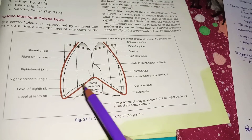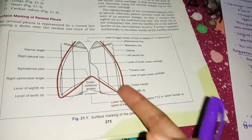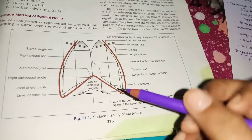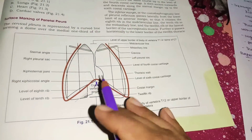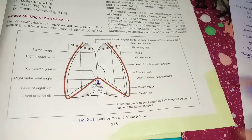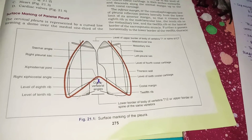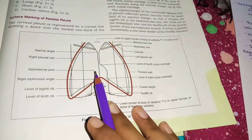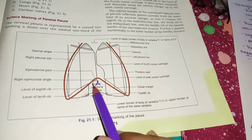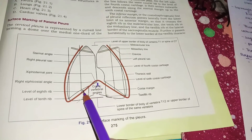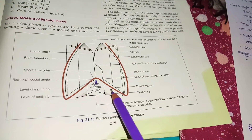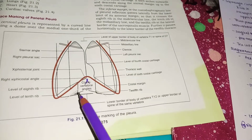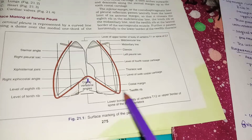The pleura descends below the costal margin at three places: first at the right xiphisternal angle, and then at the right and left costovertebral angles below the twelfth rib, behind the upper poles of the kidneys. Posteriorly it continues to the lower border of the body of vertebra T12, or the upper border of the spine of the same vertebra, ending at T12.